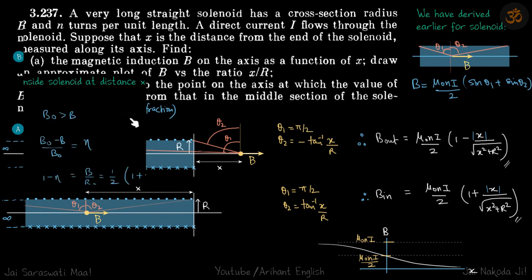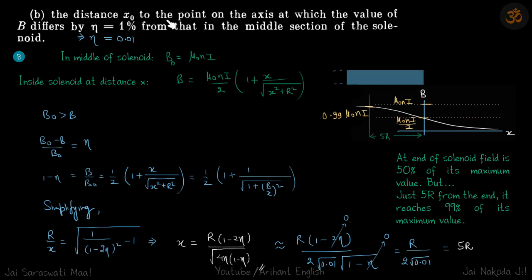Now for part b, we need to find the distance x naught to the point on the axis at which the value of b differs by eta equal to 1% from that in the middle section of the solenoid. In the middle section, because it is a quite long solenoid, the field should be mu naught ni. We need to find where it reduces by 0.01 fraction of the maximum field. Here also x is not specified as inside or outside, but you can see that outside the maximum field is only half of mu naught ni. So x naught cannot lie outside the solenoid.